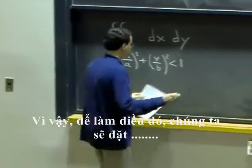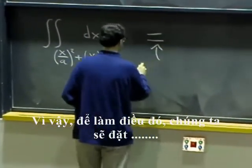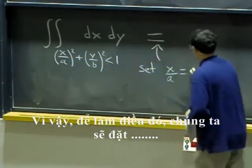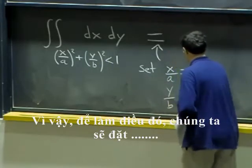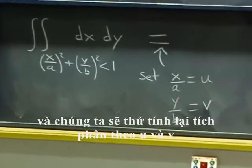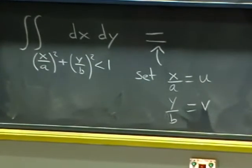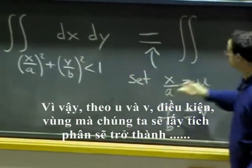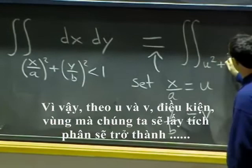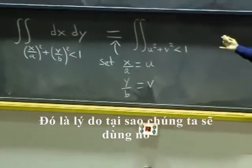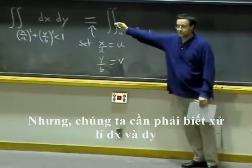So to do that, what we would like to do is set x/a to be u and y/b to be v. So we have two new variables, u and v, and we will try to redo our integral in terms of u and v. So how do we do the substitution? In terms of u and v, the condition, the region that we are integrating on, will become u² + v² less than one, which is arguably nicer than the ellipse. That's why we are doing it. But we need to know what to do with dx and dy.